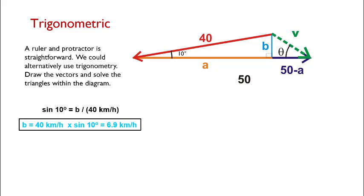Rearranging for B, we come up with 6.9 kilometers per hour, and that is our line length for B, 0.69 centimeters, using the same scale.